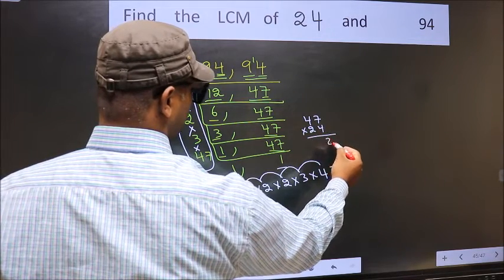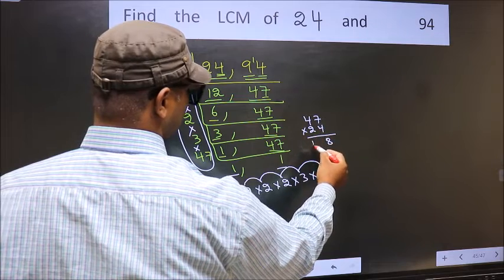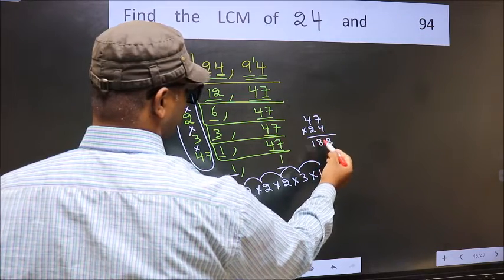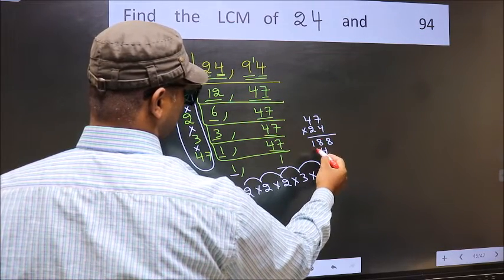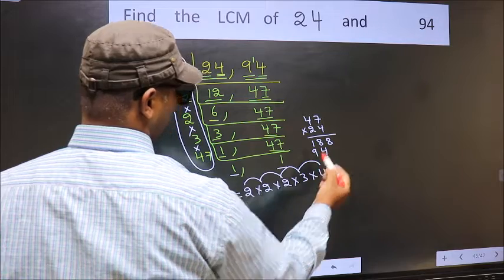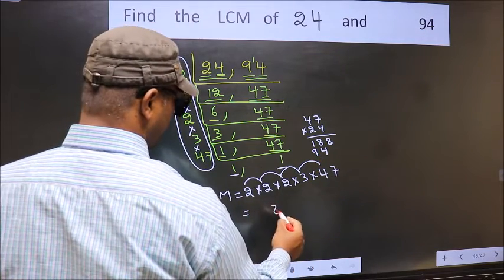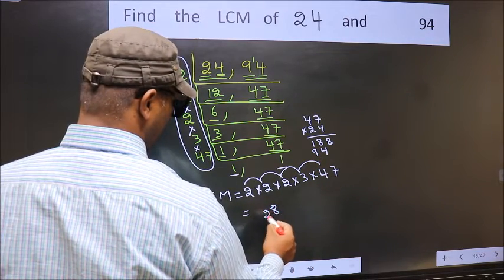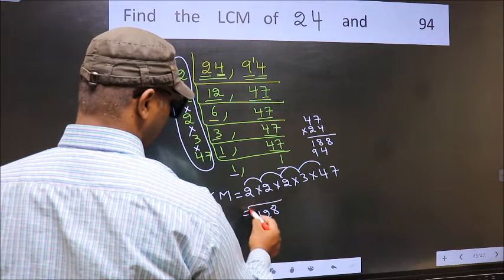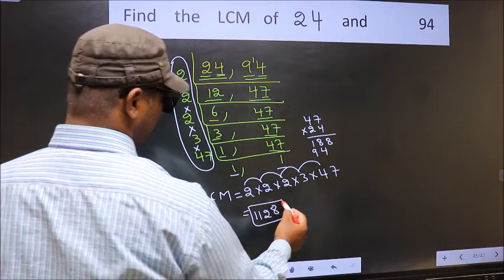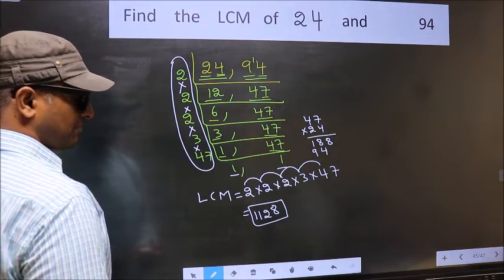4 sevens are 28. Carrying forward: 2, then 4, 4, and 16 plus 2 is 18. 2 sevens are 14. So we get: 4, 1, 2, 4, 8, 9 — giving us 1128. So 1128 is our LCM.